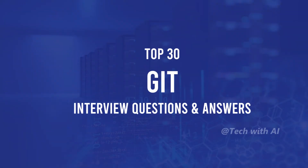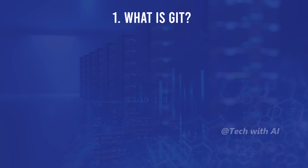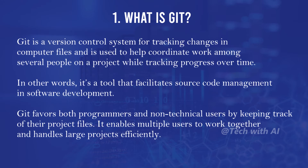What is Git? Git is a version control system for tracking changes in computer files. It is used to help coordinate work among several people on a project while tracking progress over time. In other words, it's a tool that facilitates source code management in software development. Git favors both programmers and non-technical users by keeping track of their project files, enabling multiple users to work together and handling large projects efficiently.